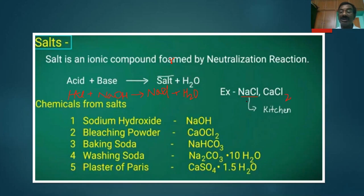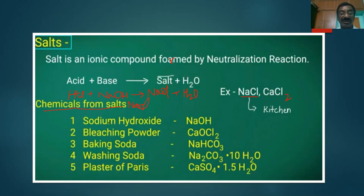Common salt is used for enhancing and cooking food. The chemicals obtained from common salt (NaCl) are: first, Sodium Hydroxide (NaOH); second, Bleaching Powder (CaOCl2); third, Baking Soda — Sodium Bicarbonate (NaHCO3); fourth, Washing Soda (Na2CO3·10H2O); and fifth, Plaster of Paris (CaSO4·½H2O).